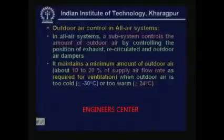When the outdoor air is very cold, say less than minus 30 degrees centigrade, or when it is too warm, say greater than about 24 degrees centigrade, then the subsystem supplies a minimum amount of outdoor air to the conditioned space. This minimum amount will be about 10 to 20 percent depending upon the application, and this minimum amount is required for ventilation. So this is maintained as long as the outdoor air temperature is too cold or too warm.